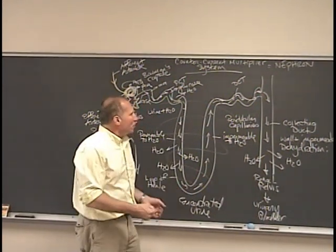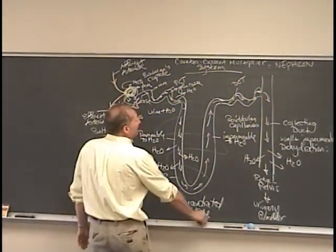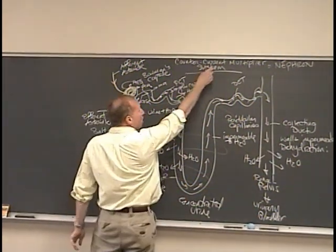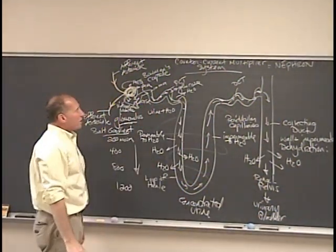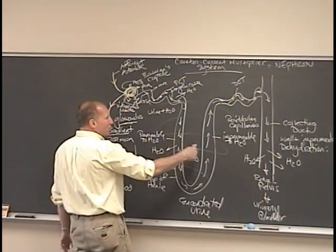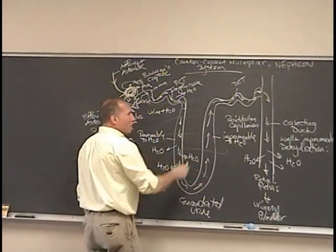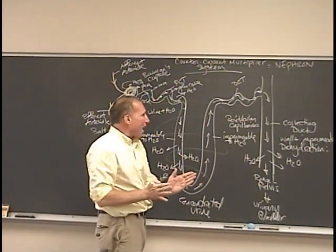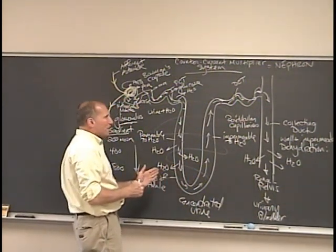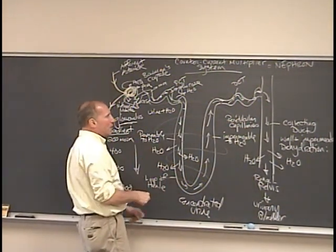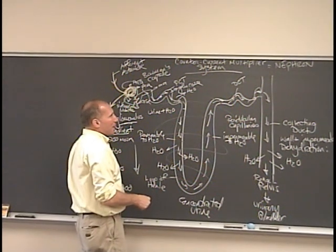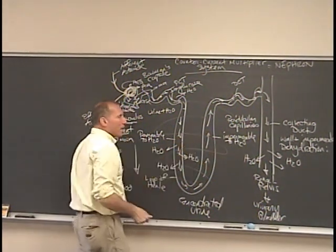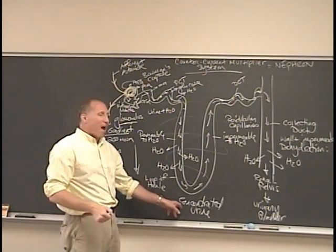And so that's pretty much how this works. We refer to this as the counter-current multiplier system. It's called counter-current because at any point within the system, the filtrate is moving in opposite directions at different places and different points. And at the same time, it multiplies the conservation effect.